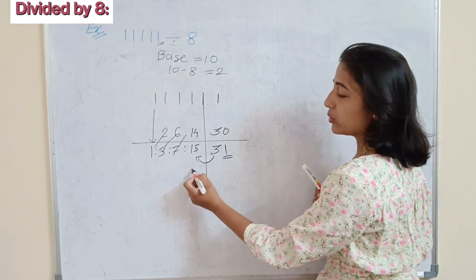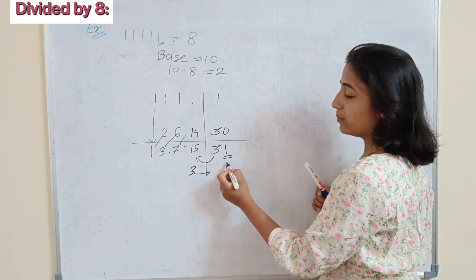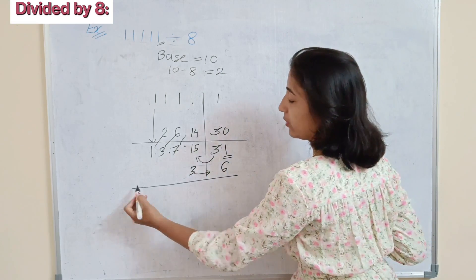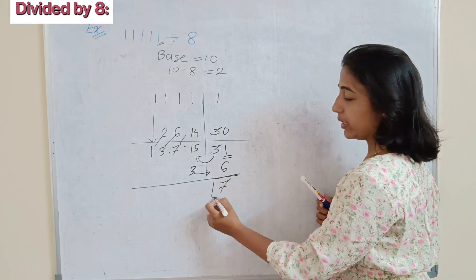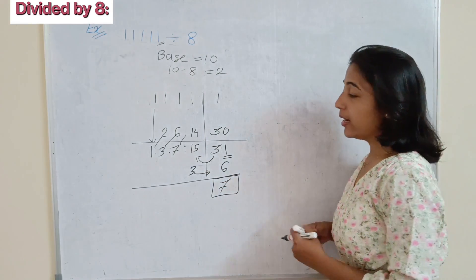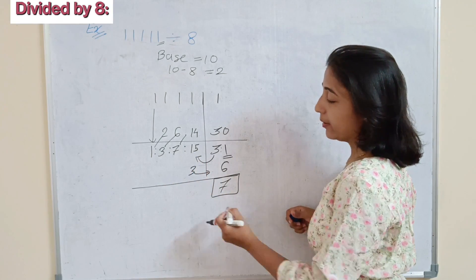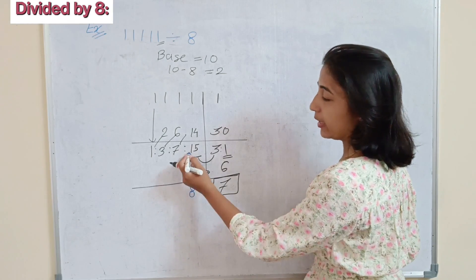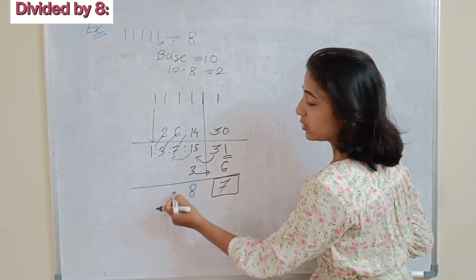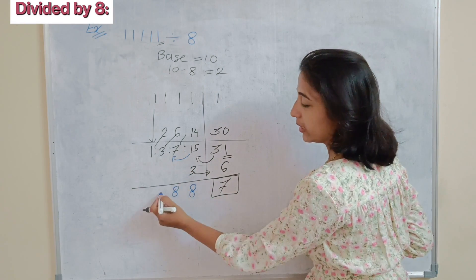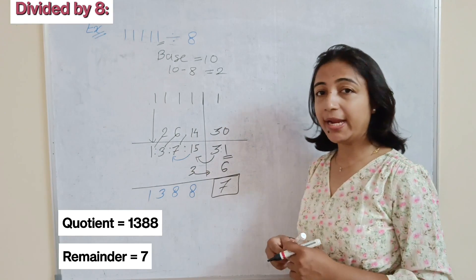That carry of 3 you add to the next number. So 3 and double of 3 is 6 — add 6 plus 1, which gives 7. That 7 is the remainder. Now adding that carry 3 to 15: 15 plus 3 is 18, carry 1 to the next position, so 7 plus 1 is 8.